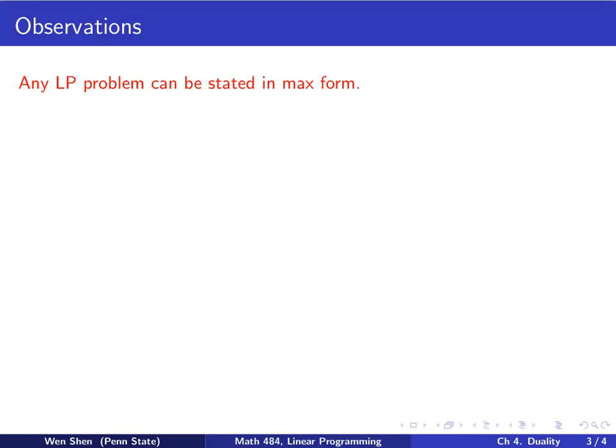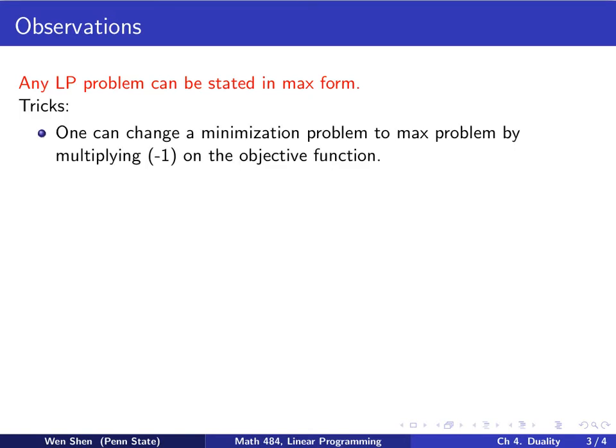Let's make a further observation, which is really useful. We observe that any linear programming problem can be stated in the max form. So how do you do that? Well, there are a few tricks I can mention here. The first trick is, if you have a minimization problem, then you can change it into a maximization problem by multiplying negative one on the objective function.